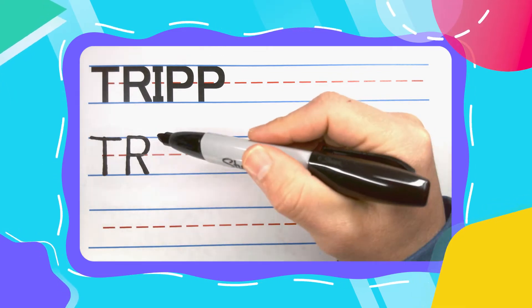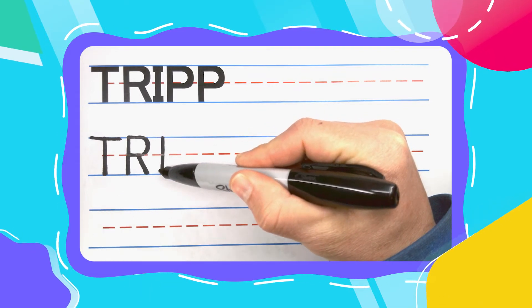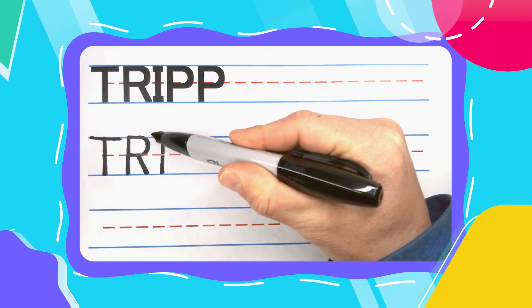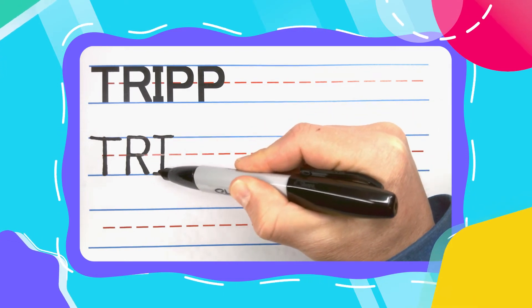The next letter in TRIPP is an I. And I start my I's with a straight up and down line. I also give my I's a little hat at the top, a left foot, and a right foot.